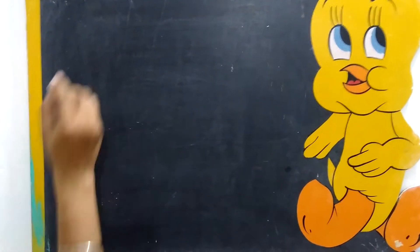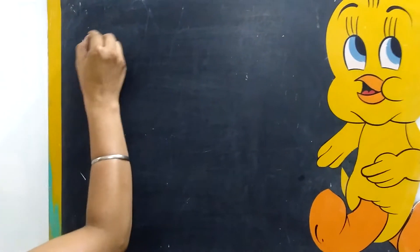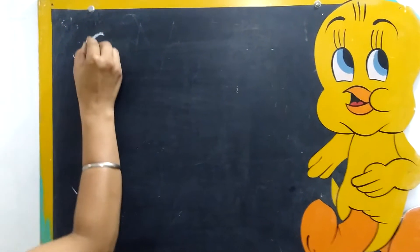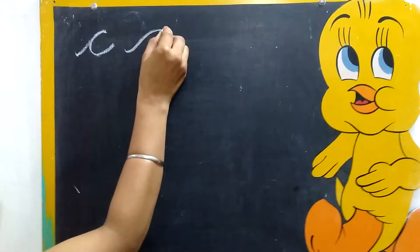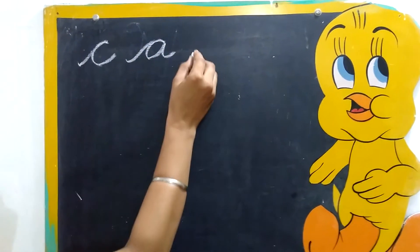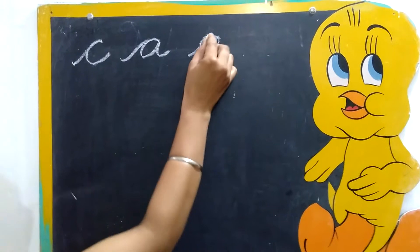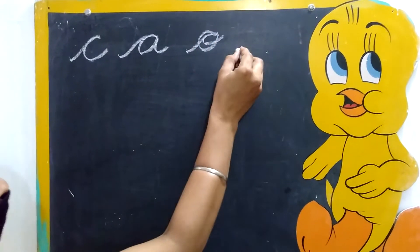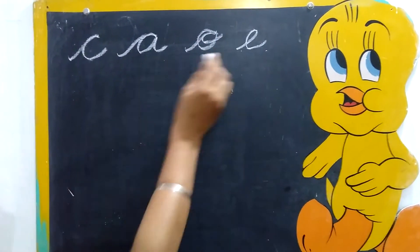Hello students, let's restart. Small c, a, o, e. Now we will learn 4 alphabets.